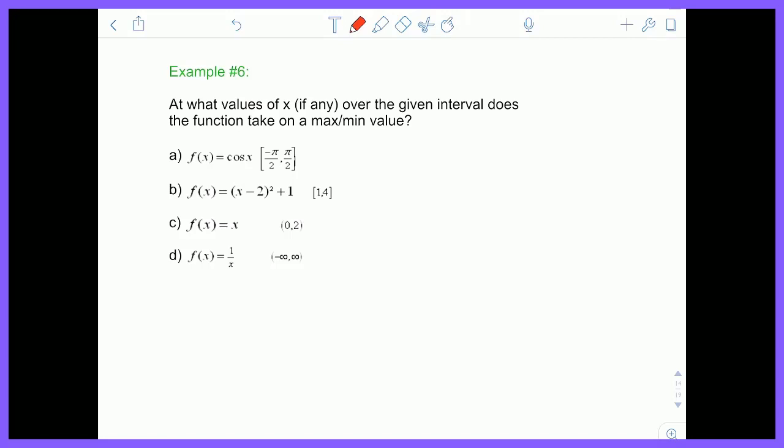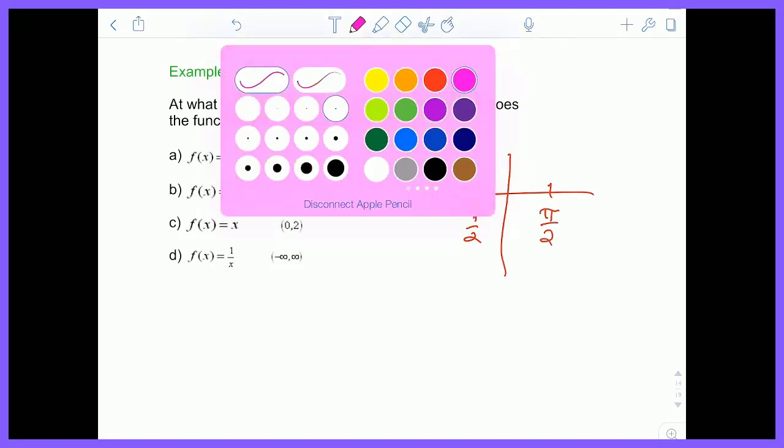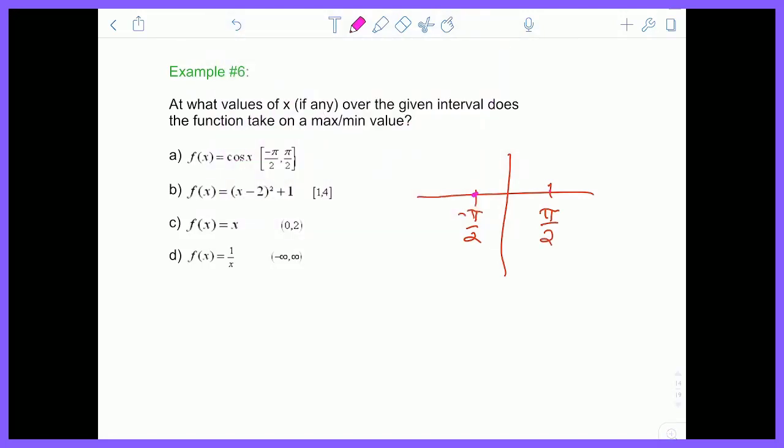So if we remember, we're going from negative pi over 2 to pi over 2, so that's actually pretty simple. Because negative pi over 2 and pi over 2, we know cosine is 0. So the cosine function is like right here, 0. And then we know that cosine of 0 is 1.